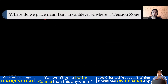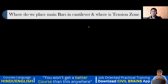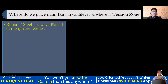Now a very interesting question: where do we place main rebars in a cantilever beam and where is the tension in that beam? First, understand we have different types of beams — simply supported, cantilever, fixed, and overhanging beams. Practically, all beams in construction behave as fixed beams. A 100% simply supported beam is never achievable on site.